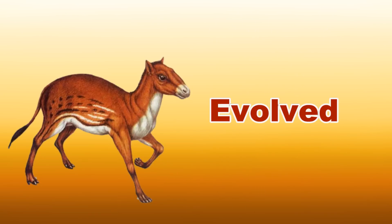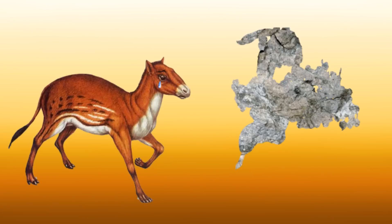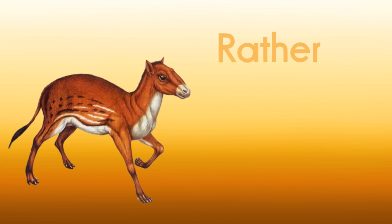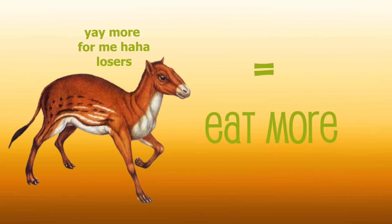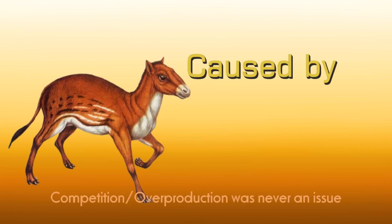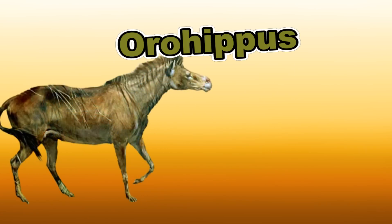Hierocotherium evolved as its surroundings changed. The berries and easier-to-chew plants were replaced by tougher plants in its environment. A few of the hierocotherium had a molar rather than a premolar, meaning they had four molars per side rather than three, allowing them to eat more. These hierocotherium were able to get more food and pass this mutation on. This process is called natural selection, meaning organisms better adapted to the environment tend to survive and produce more offspring. This particular adaptation was caused by the availability of food.